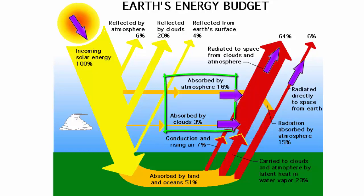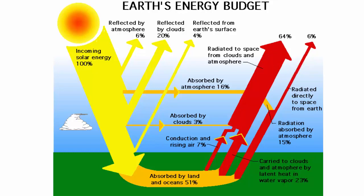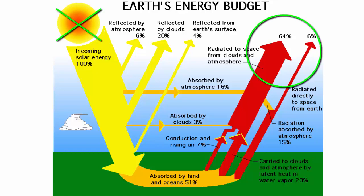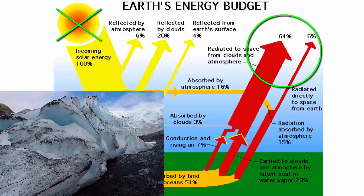Eventually, the heat of the atmosphere is also transferred back to space from the upper atmosphere. This image shows the ongoing balance of heat between what arrives and what is returned. If the Sun stopped radiating heat, all Earth's heat would eventually radiate to space, and the surface would get progressively colder and colder until it was unlivable.